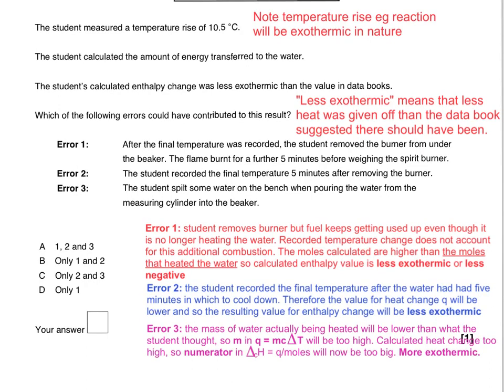In the final error, the mass of water actually being heated will be lower than what the student thought because they spilled some, but they haven't realised it has affected the total mass of water in their container. So the value for m in Q = mcΔT will be too high, meaning Q will be too high. So the numerator Q in ΔcH = Q/moles will be too big as well, which gives a more exothermic ΔcH value.